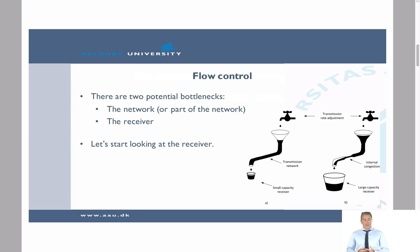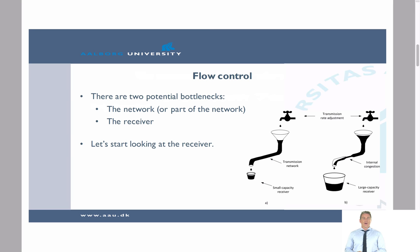When talking about flow control, there are two potential bottlenecks when making a transmission. One is a bottleneck in the network or a part of the network, and the other is a bottleneck on the receiver side. Let's start by looking at the potential bottleneck on the receiving side.